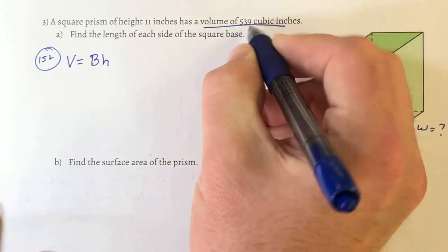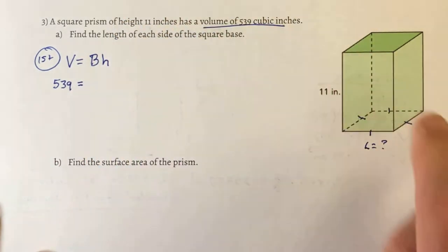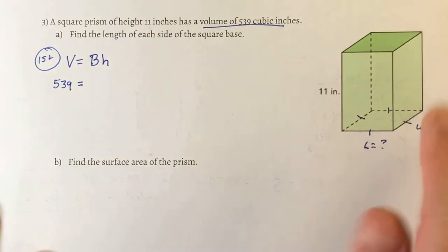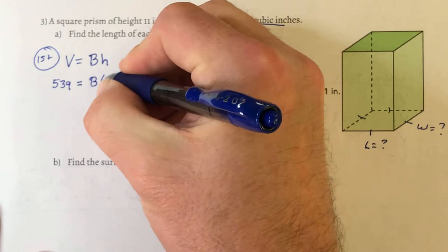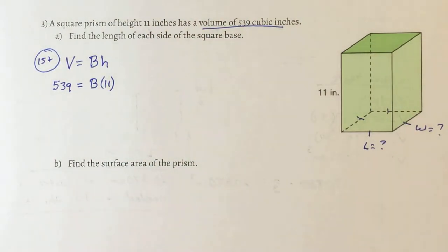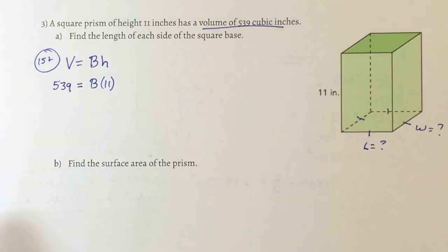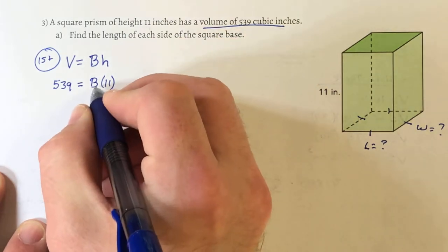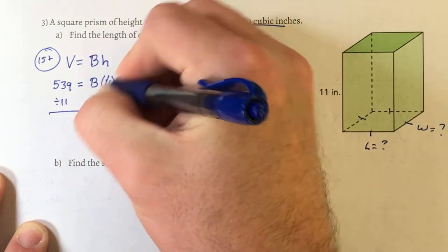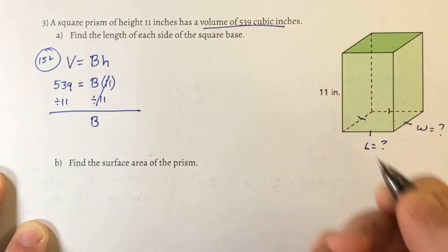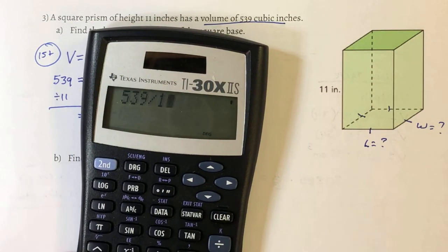So: 539 equals B times 11. I know the height is 11 but not the area of the base. To solve for capital B, divide both sides by 11. B equals 539 divided by 11, which is 49. So the area of the square base is 49. I still need to find the actual length and width from that area.